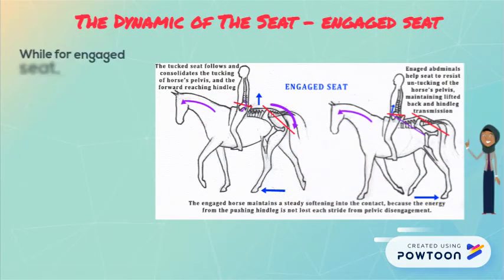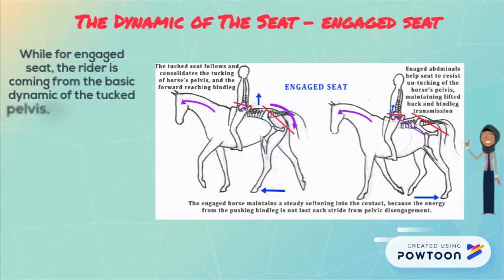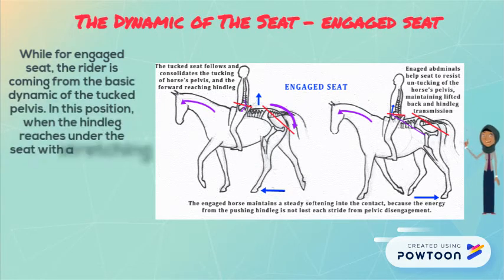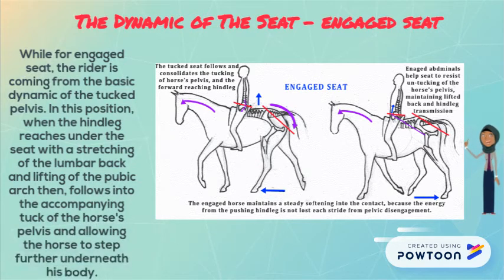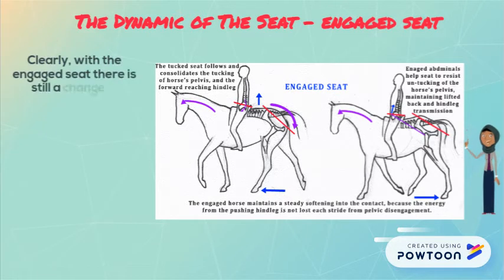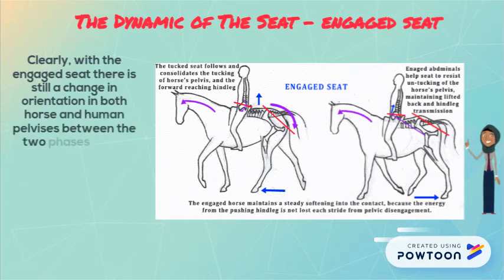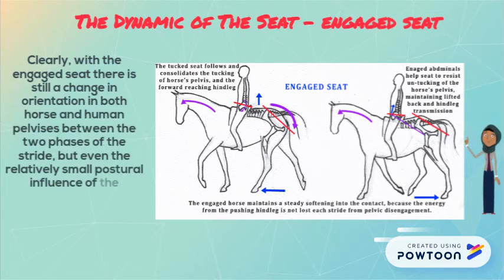With an engaged seat, the rider is coming from the basic dynamic of the tucked pelvis. In this position, when the hind leg reaches under the seat with a stretching of the lumbar back and lifting of the pubic arch, then it follows into the accompanying tuck of the horse pelvis, allowing the horse to step further underneath his body. Clearly, with the engaged seat, there is still a change in orientation in both horse and human pelvises between the two phases of the stride.